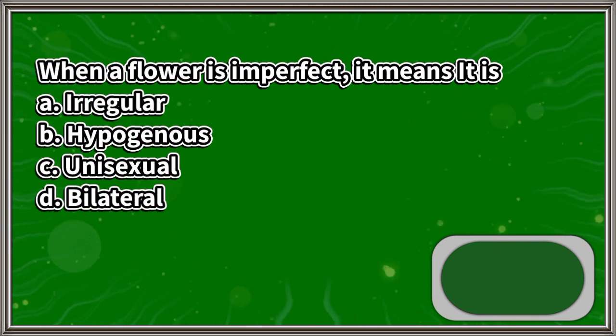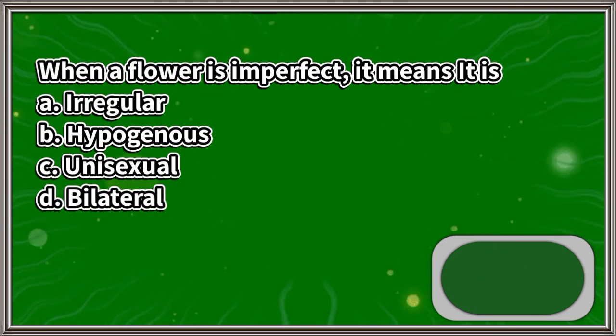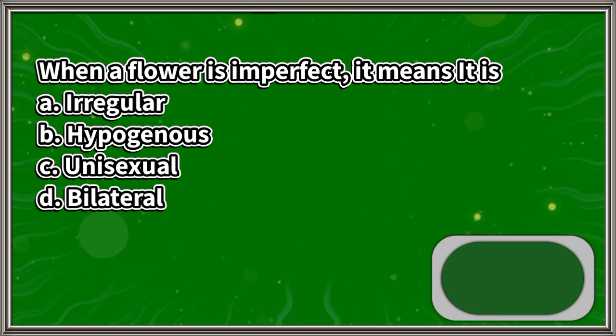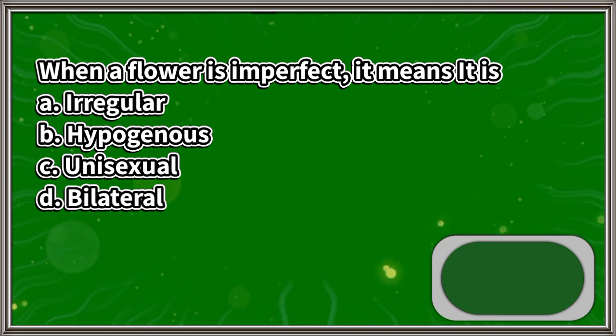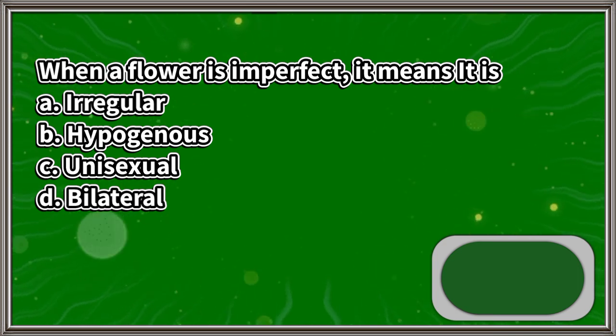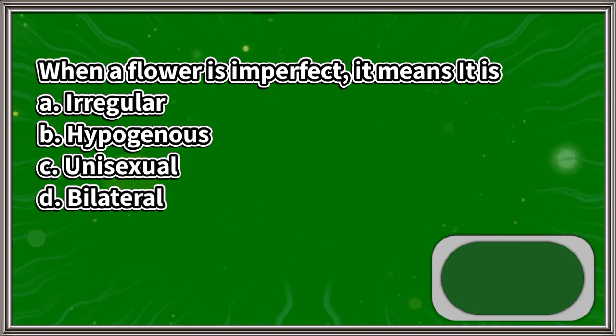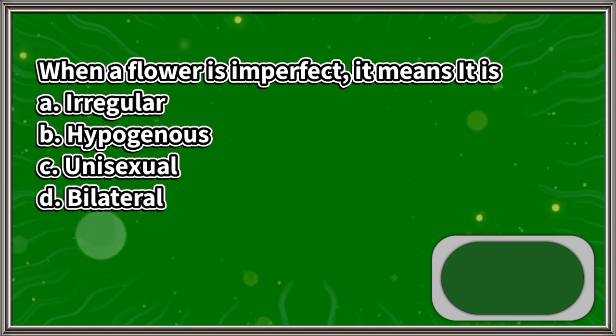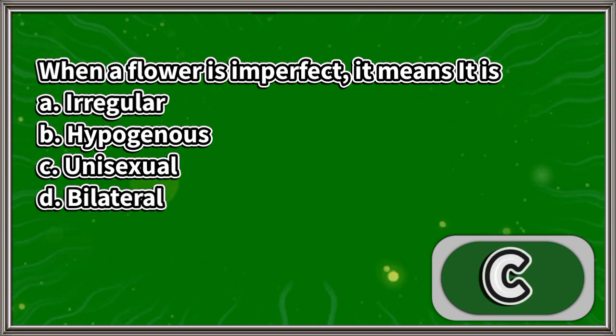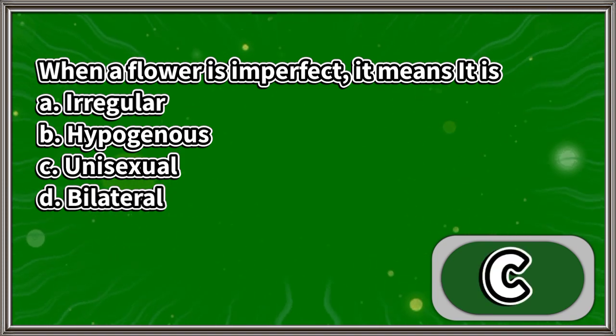When a flower is imperfect, it means it is: A. Irregular, B. Hypogynous, C. Unisexual, D. Bilateral. The answer is letter C.